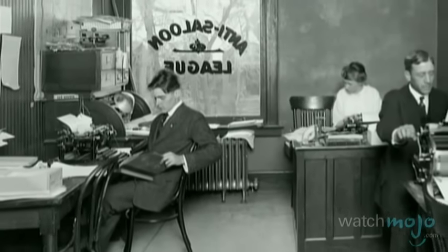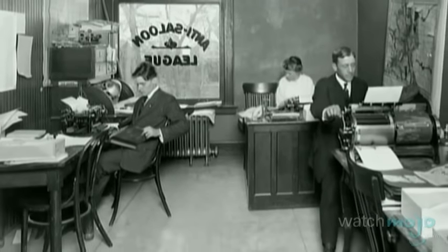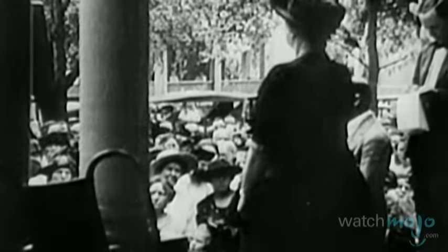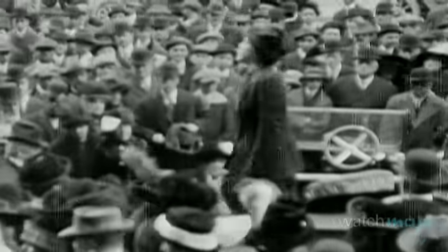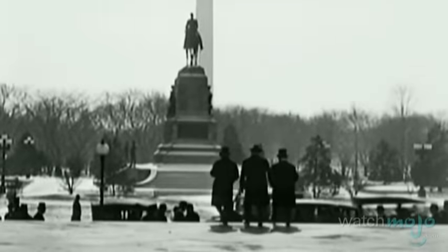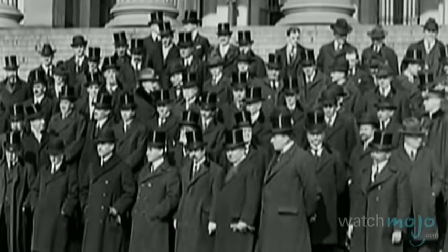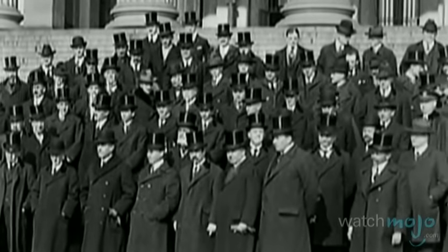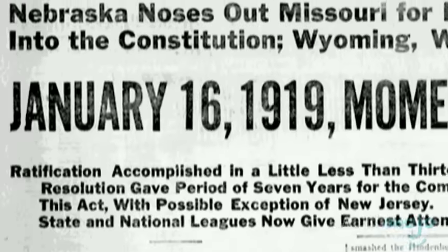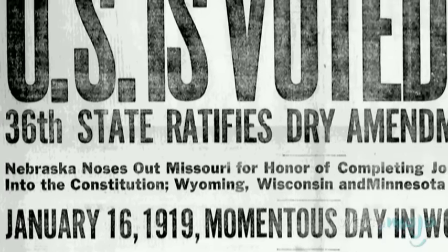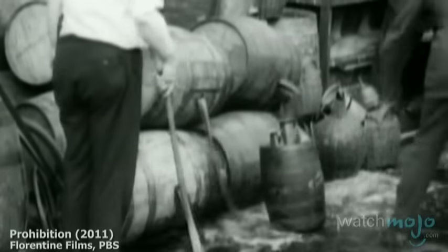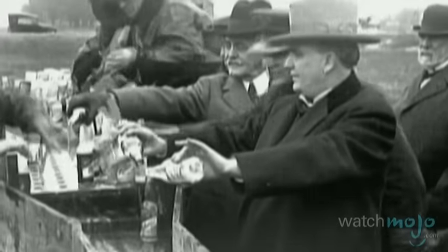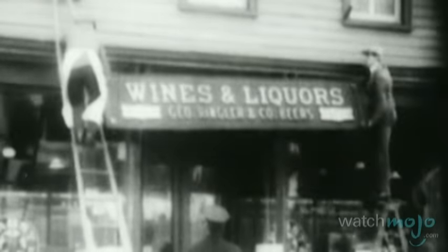Support for prohibition grew and organizations like the Anti-Saloon League lobbied for the cause. Many African Americans, women's groups and progressives were also in favor. The 18th Amendment of the Constitution was the change that established the liquor ban, and it was proposed by the U.S. Senate in 1917. Two years later, it was ratified and then enabled when Congress passed the Volstead Act, which identified the affected liquors and the consequences for the law's violation. Prohibition went into effect on January 16, 1920.